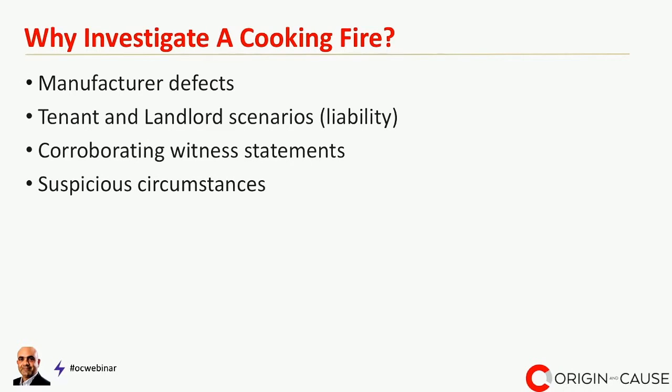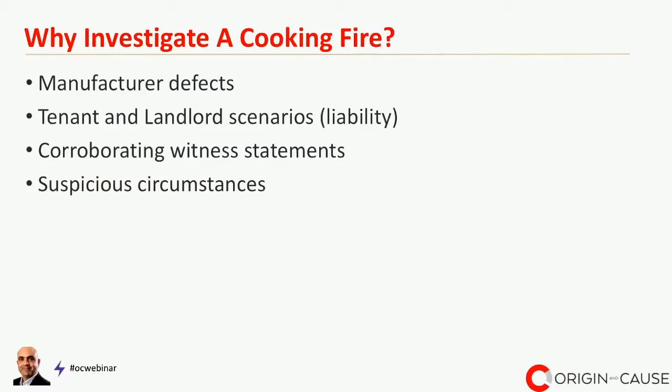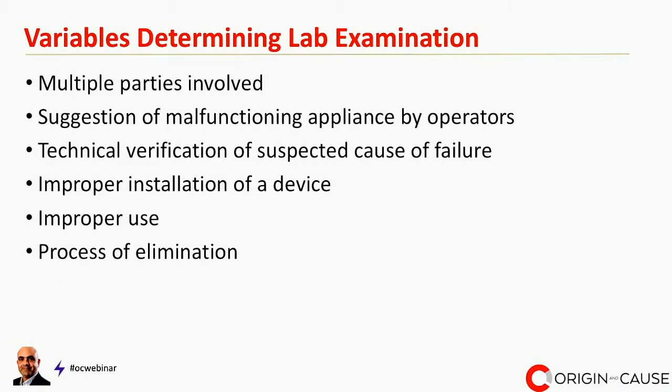Getting witness statements about what people observed is critical — for example, a tenant who was using the electric range. It's important to do a forensic examination and make sure the physical evidence corroborates those witness statements. Finally, if there are any suspicious circumstances surrounding the cause of the fire, that's another reason why you'd want to do a forensic examination, particularly an examination of the equipment involved.